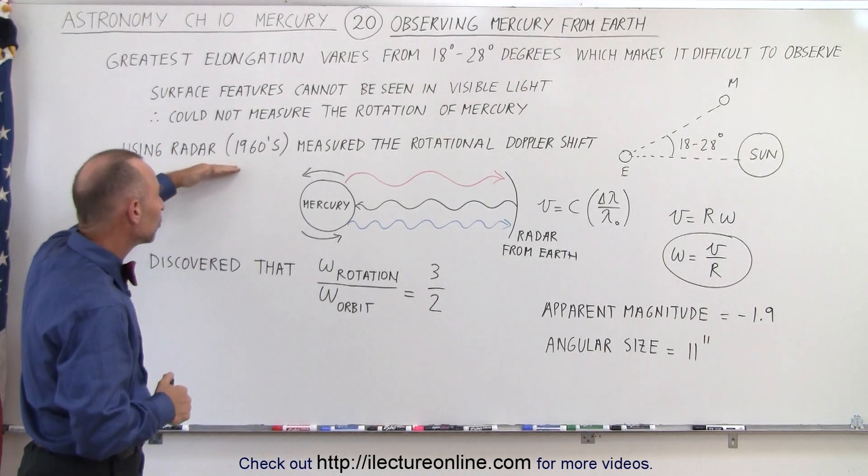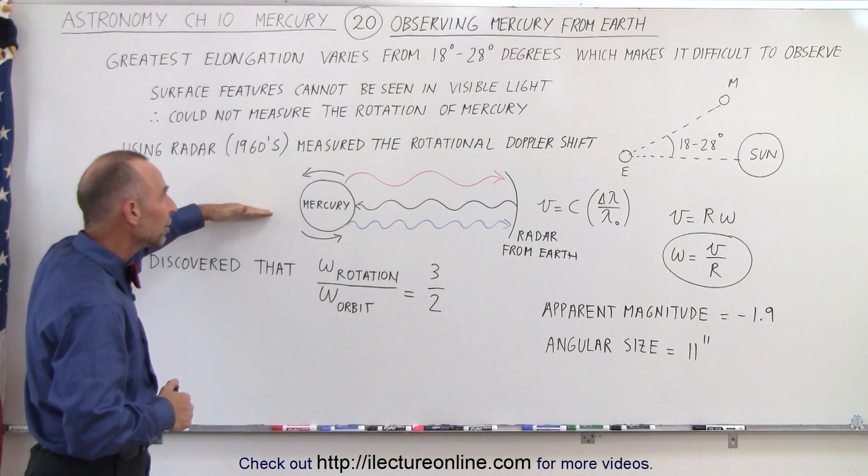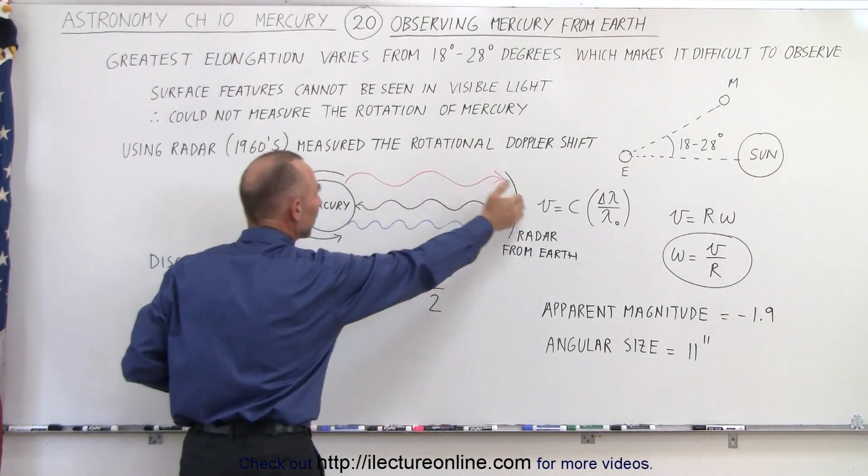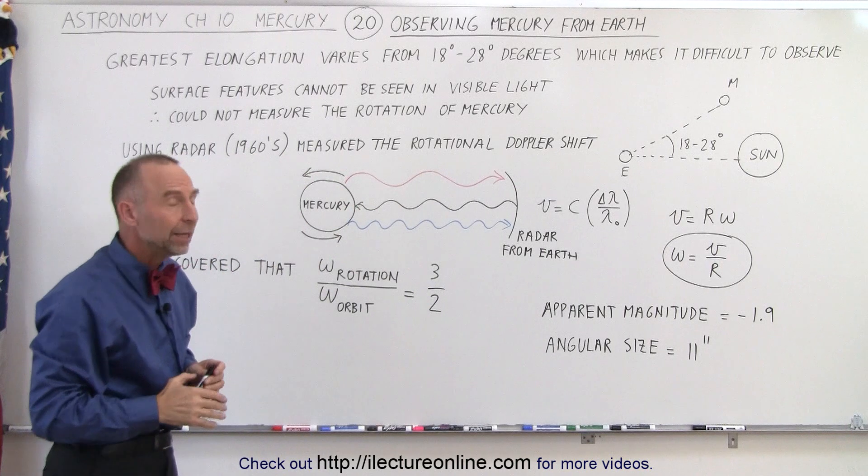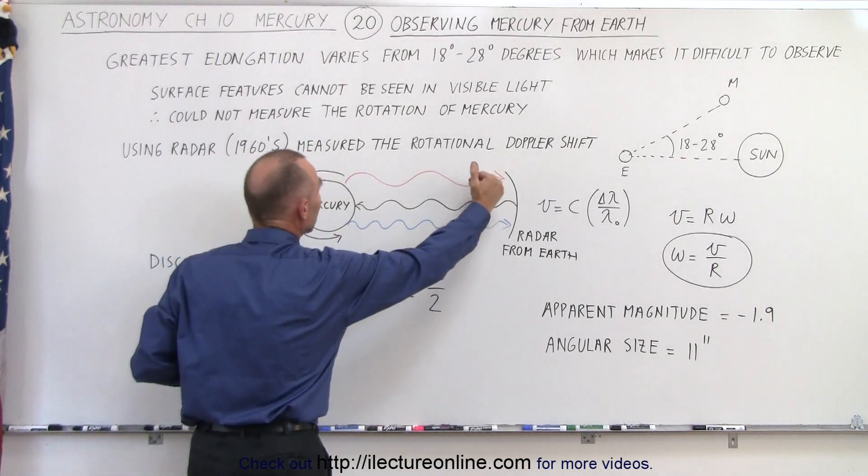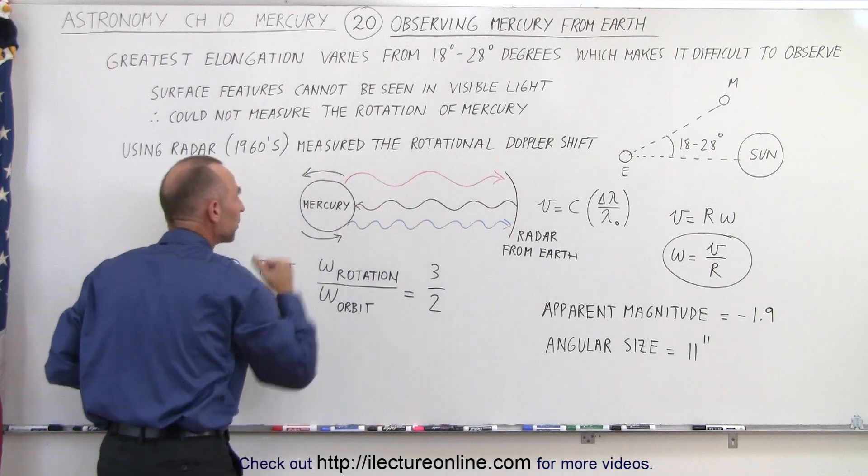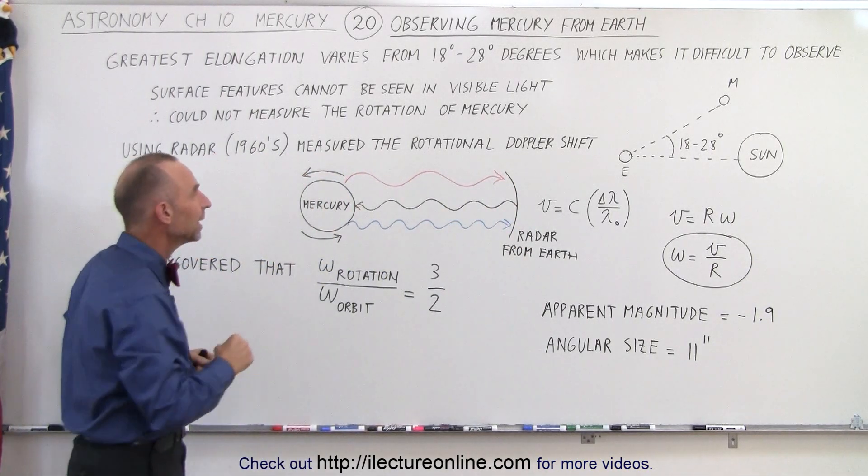But then in the 1960s, when they were able to start using radar, they started sending radar beams of particular frequency from the Earth to the surface of Mercury. Notice that some of those radar beams will hit the top portion of the planet, and some of those radar beams will hit the bottom portion of the planet. And since the planet is rotating,